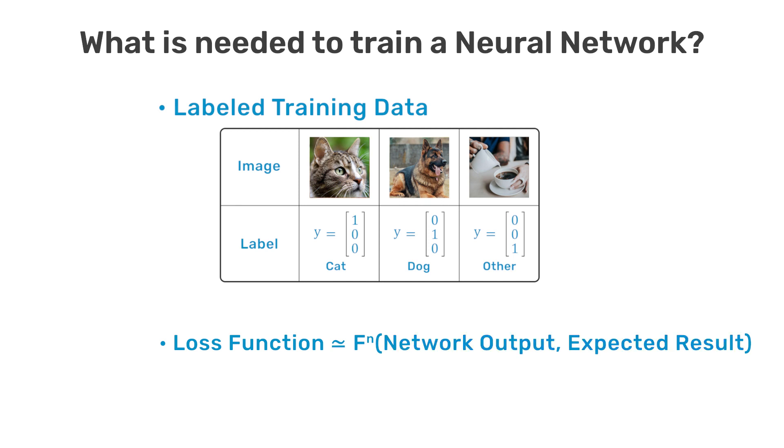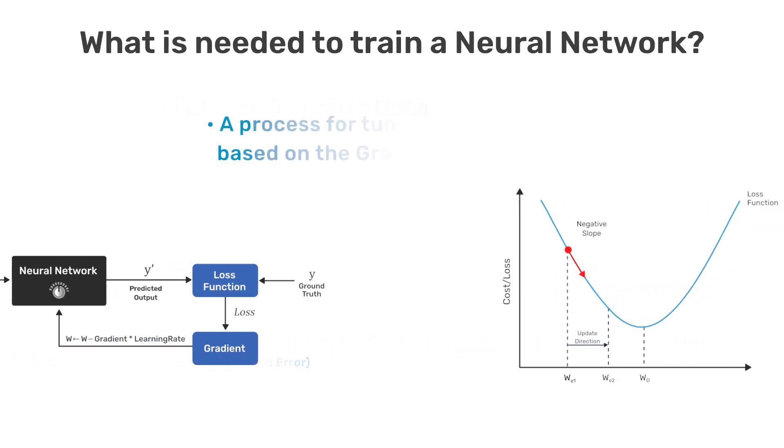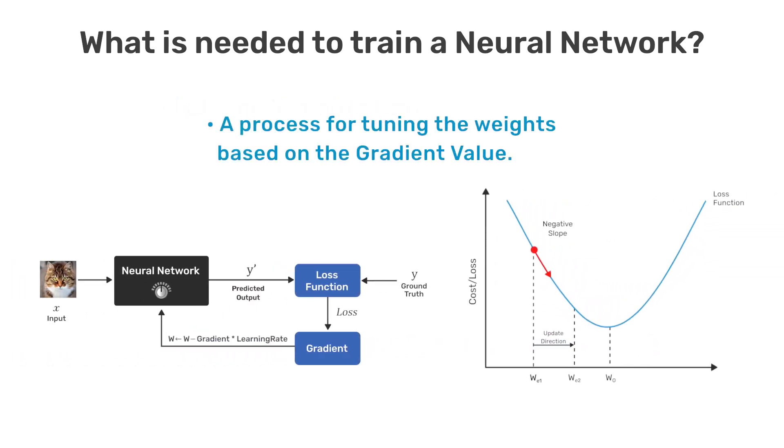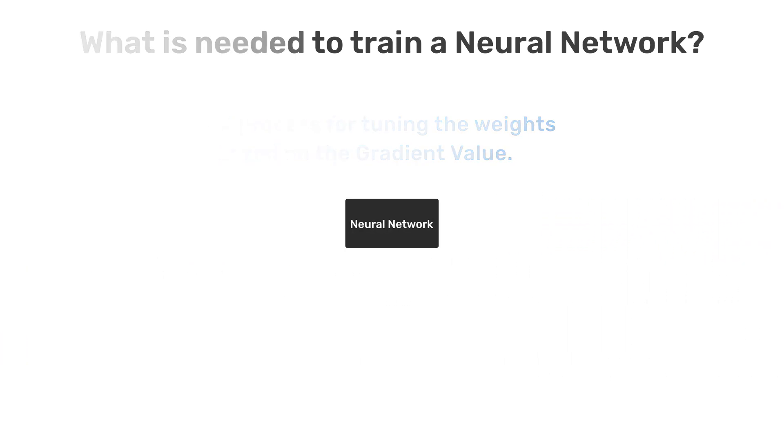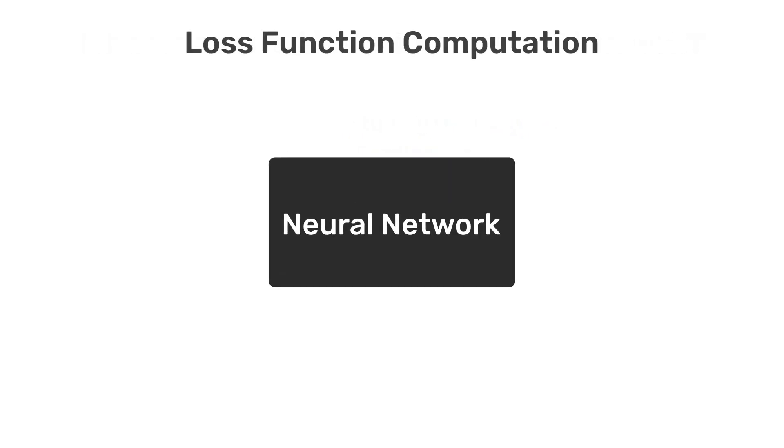There are many different types of loss functions we can use, but in this example we use a loss function called mean squared error. Finally we need a process for updating the weights based on the value of the loss function. So let's start by taking a closer look at how the training data is represented and also how we compute the value of a loss function.